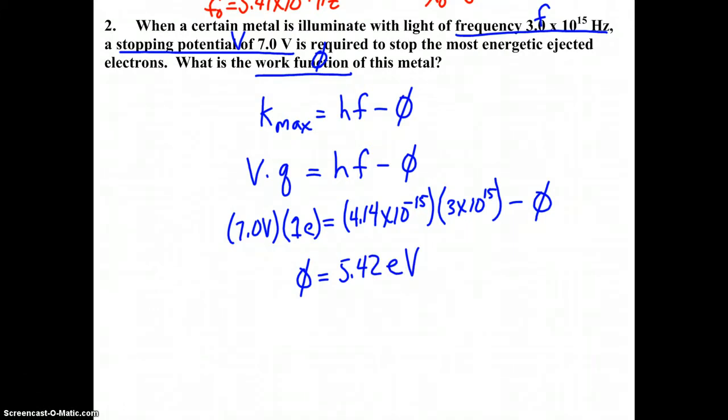If you did this in joules, you would substitute 1.6 times 10 to the negative 19 coulombs for your q value, and use the 6.63 times 10 to the negative 34 joule second form of Planck's constant. You would get 8.7 times 10 to the negative 19 joules. You can express your answer in joules or electron volts. To me, electron volts is easier because you don't have to deal with 1.6 times 10 to the negative 19 for the charge of the electron.